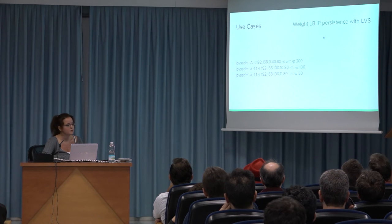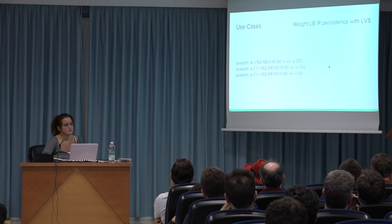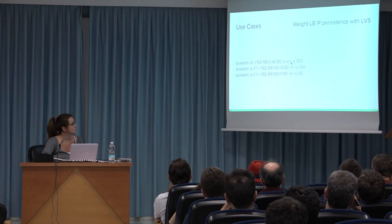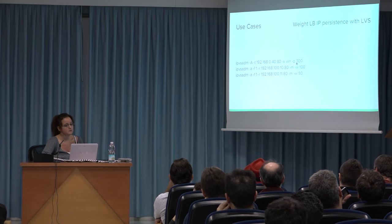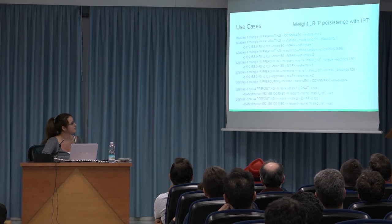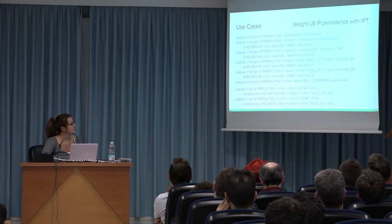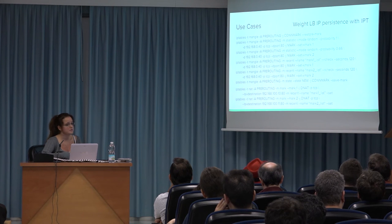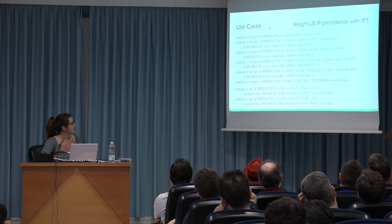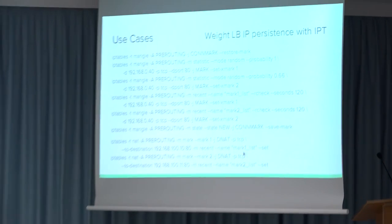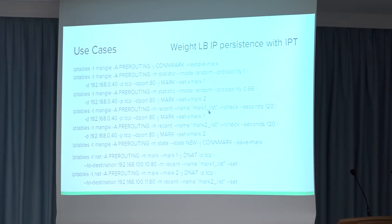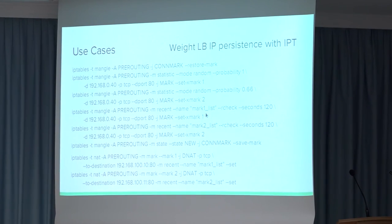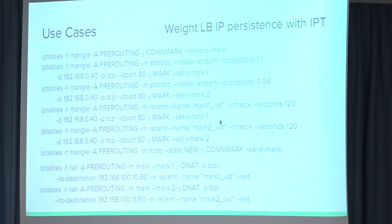IP persistence is quite important. With LVS it's fully integrated — we just set the parameter and the timeout. With IP tables it's more complex: we need at least three rules per backend. We have to mark packets multiple times — first in the Mangle table, then in the NAT table — to forward to a certain real server. Another problem is maintaining two lists of source IP addresses in order to know the persistency for each backend.